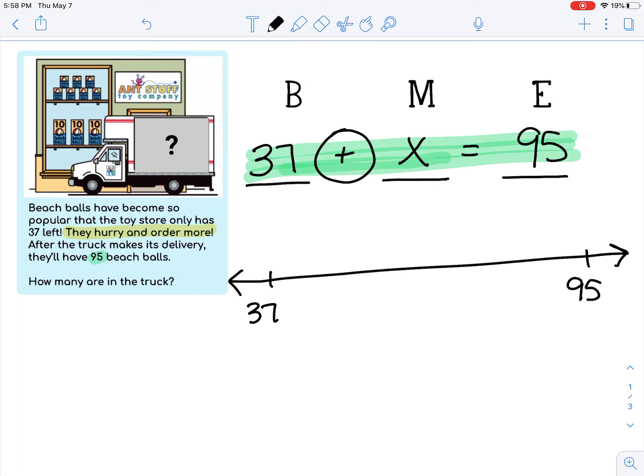So I'm going to do that in steps though by using strategies. 37 plus 3—that's a make a 10 strategy because I added 3 and 7 to make another 10—and I got up to 40. Now I see that I want to get all the way up to 95. Well, I know that 4 plus 5 is 9, so I know that 40 plus 50 is 90. So I'm going to jump up 50 and get to 90.